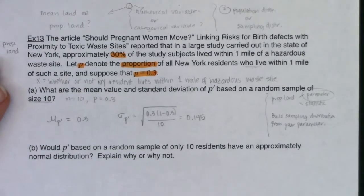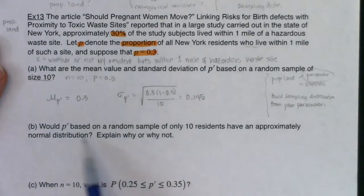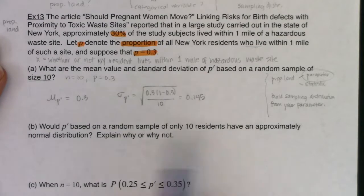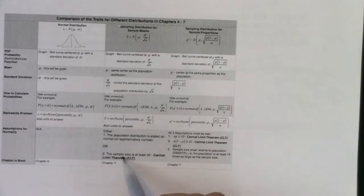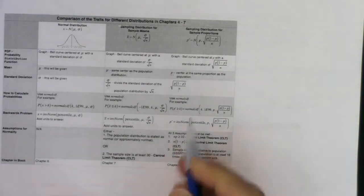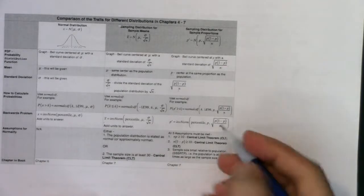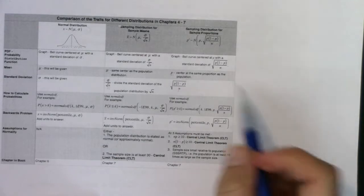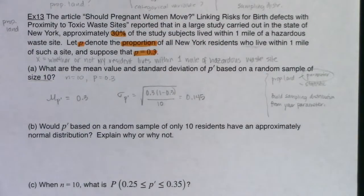Part (b) asks whether the sample proportion based on a random sample of only 10 residents would have an approximately normal distribution, and to explain why or why not. To assess normality we use the Central Limit Theorem for proportions, which is checked differently than for means. We need: NP ≥ 10, and N(1−P) ≥ 10, and then we check whether the sample size is small relative to the population.